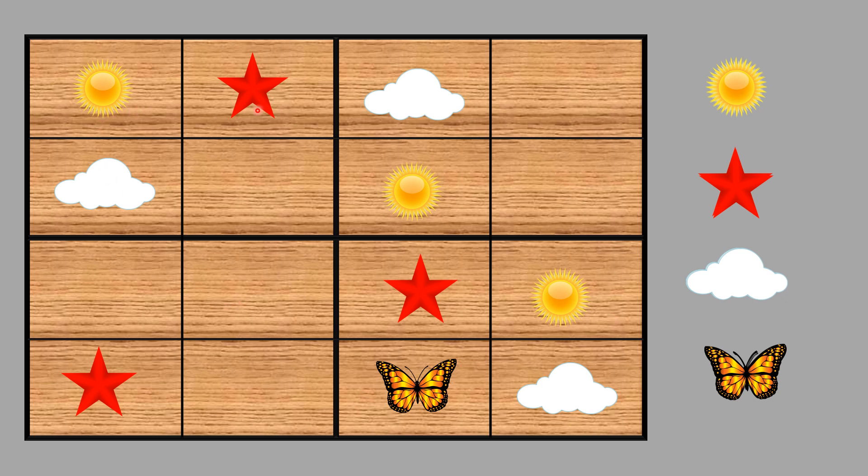Now this row we can see has already three pictures. So once again, which is missing? That's correct, butterfly is missing. So we place the butterfly here.